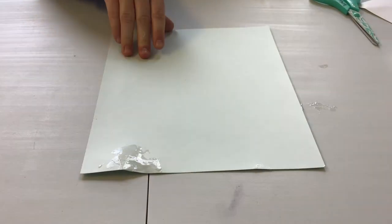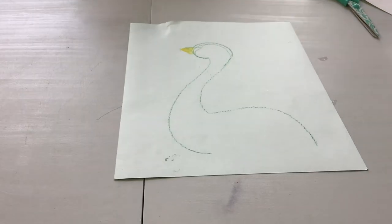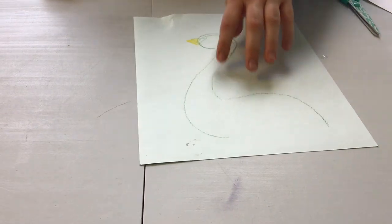So to start off you're going to want to take your paper and draw an outline of a goose. You can see I've made a really simple shape, I added a beak,